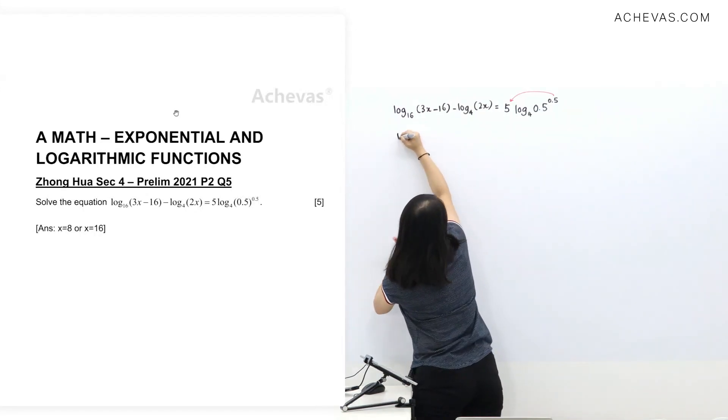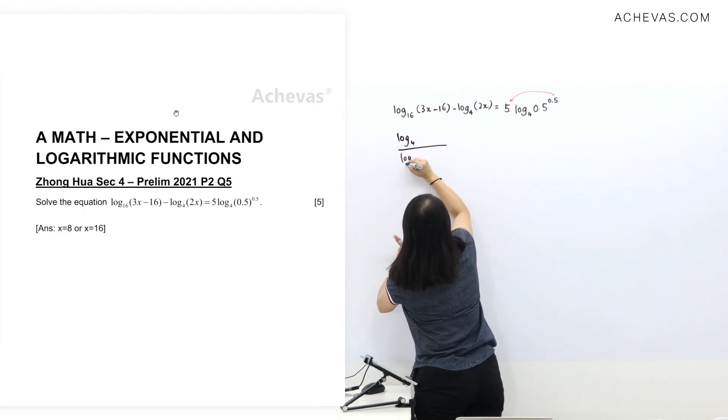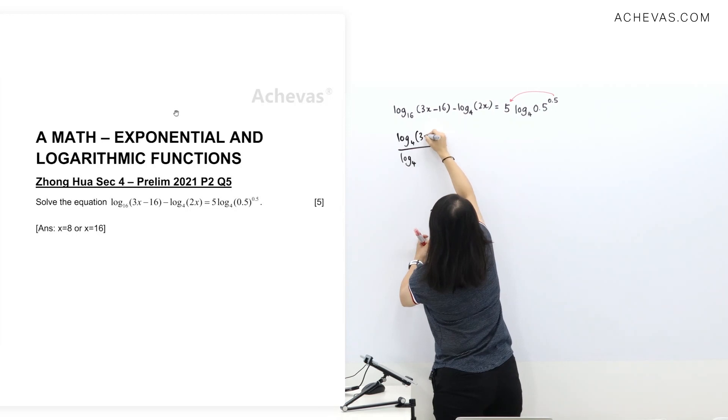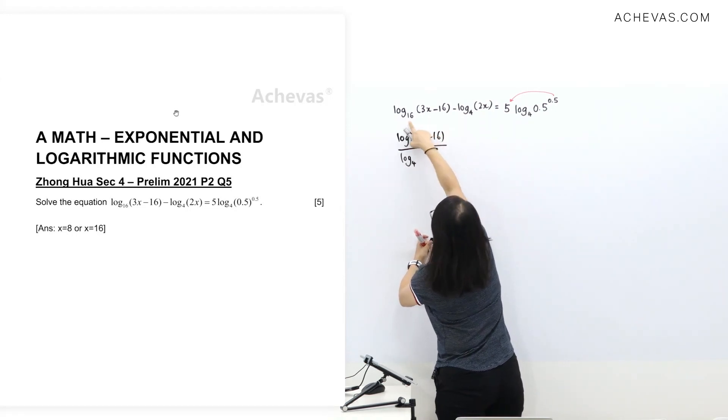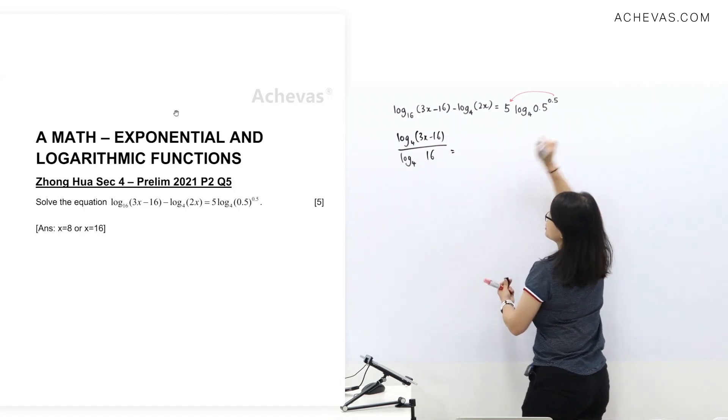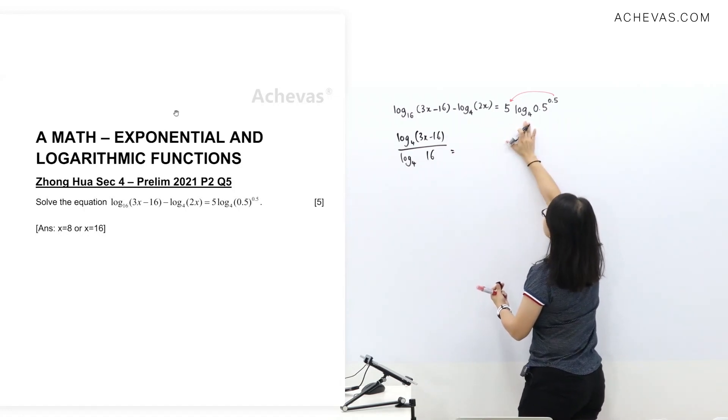Log base 16 change to base 4, and put this 3x minus 16 over log base 4 of 16. And since I'm going to move this there, so I'll write equal sign here. I'm going to do this first.